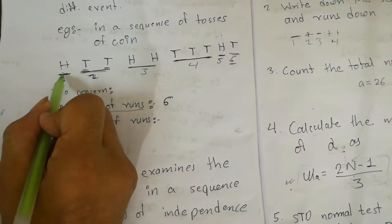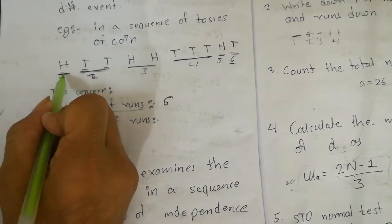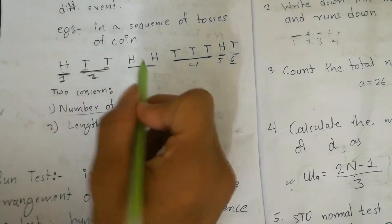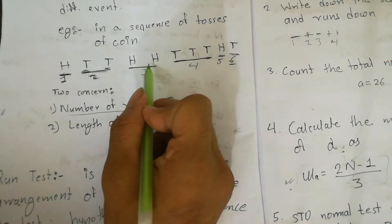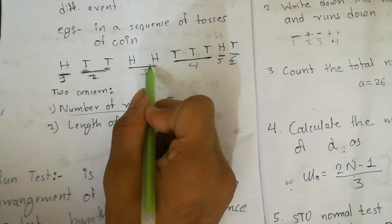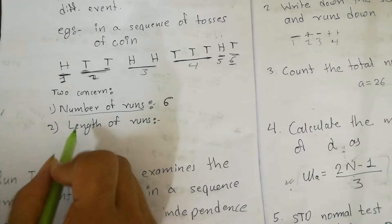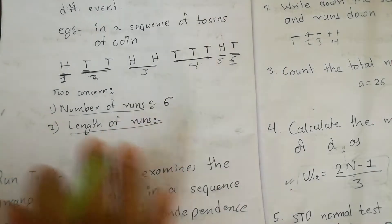The length of the runs: the first run has length 1, the second has length 2, the third has length 2, the fourth has length 3, and so on. This is how we determine the length of each run.